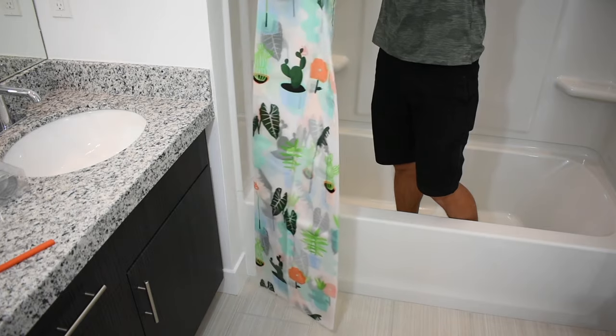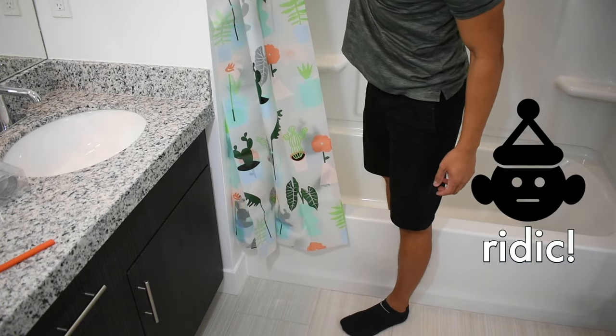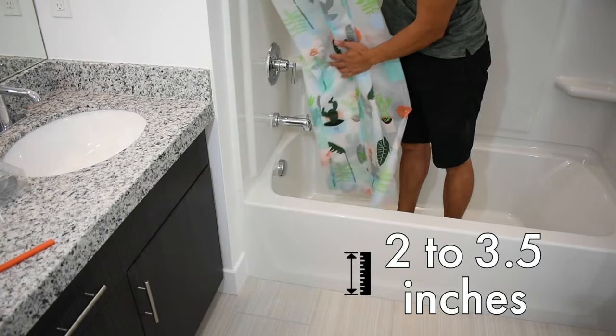You also need to make sure that you're considering the length of your shower curtain along with the depth of your tub. You don't want to go too high where it looks ridiculous or too low where it drags on the floor. A good height would be anywhere from two to three and a half inches off the ground.